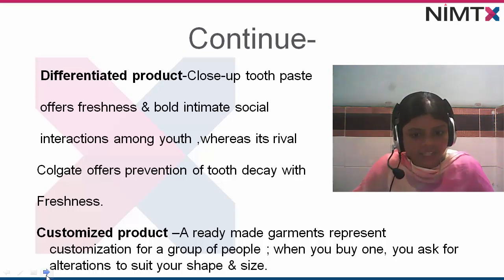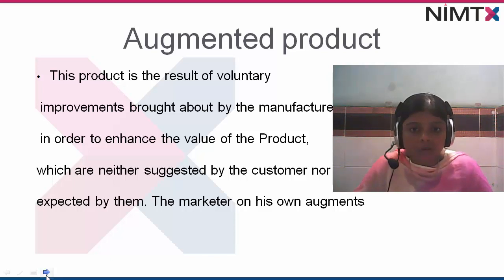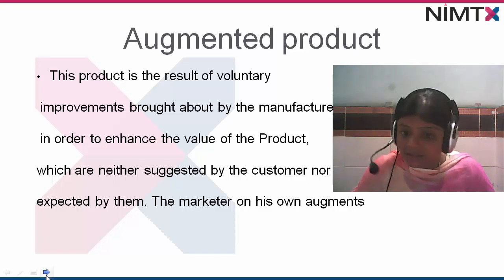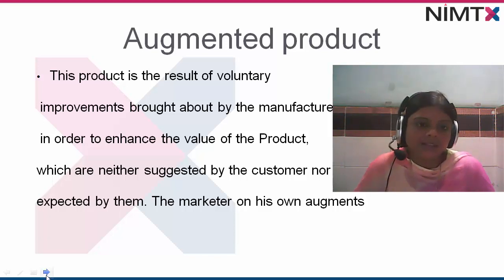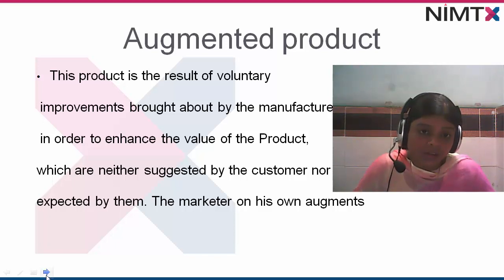The augmented product is the result of voluntary improvements brought about by the manufacturer in order to enhance the value of a product, which are neither suggested by the customer nor expected by them. The marketer on his own adds these augments. It is also the effect of the technological environment, and you should correlate each and everything with the market scenario.